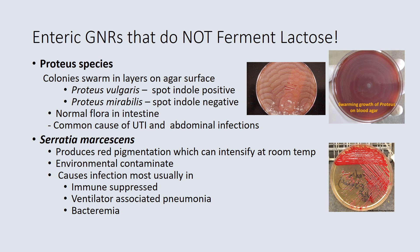Other gram-negative rods do not ferment lactose. Proteus species is known for swarming layers on the agar surface. Proteus vulgaris is spot indole positive, while Proteus mirabilis is spot indole negative. They are found as normal flora in the intestine and are a common cause of urinary tract infection and abdominal infections. Serratia marcescens is an interesting environmental organism that produces an intense red pigmentation that increases in color over days, particularly at room temperature. It usually only causes infection in immunosuppressed patients, those with ventilator-associated pneumonia, or bacteremia when IV lines are in place.